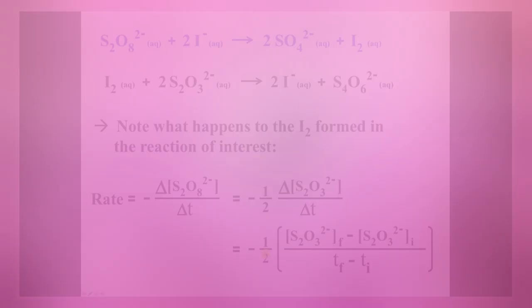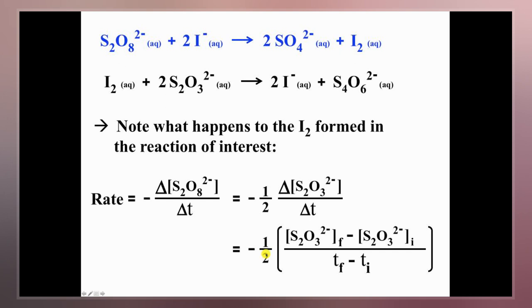The iodine clock reaction is a classical chemical clock demonstration experiment to display chemical kinetics in action. It was discovered by Hans Heinrich Landolt in 1886.